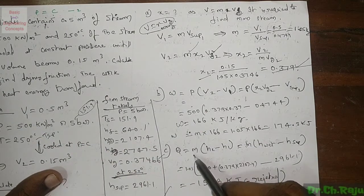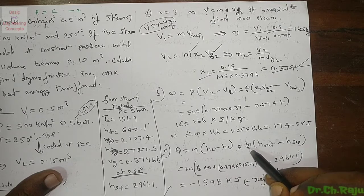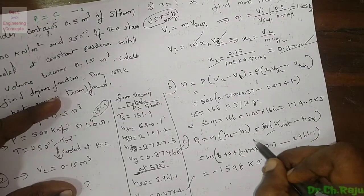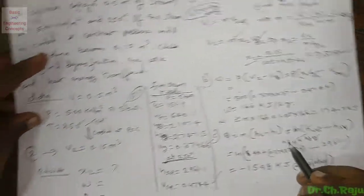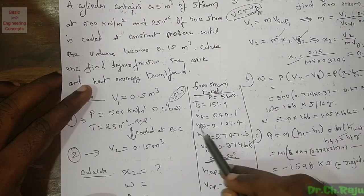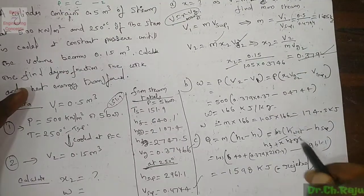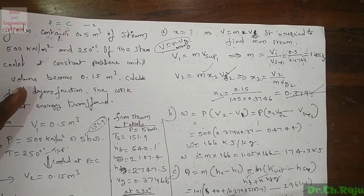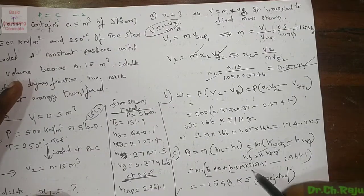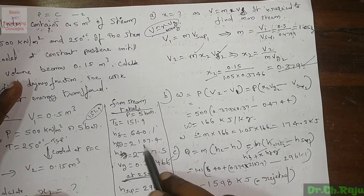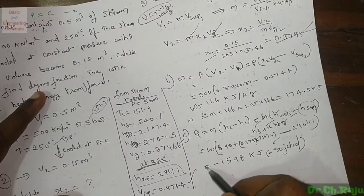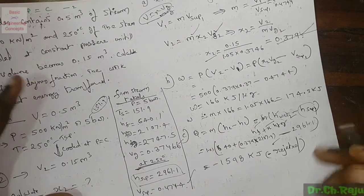Heat energy Q = m(H₂ - H₁). H₂ is wet steam enthalpy = hf + x₂·hfg. At 5 bar: hf = 640.1 kJ/kg, hfg = 2107 kJ/kg. So H₂ = 640.1 + 0.379 × 2107 = 1439 kJ/kg. H₁ = h_sup = 2961.1 kJ/kg. Q = 1.05 × (1439 - 2961.1) = -1598 kJ. The negative sign indicates heat is rejected.